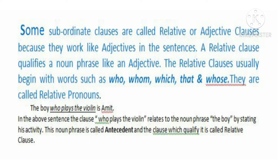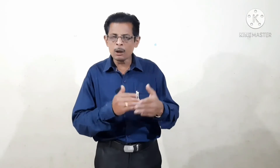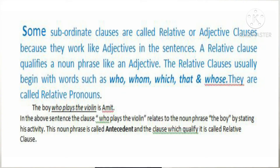All these are only relative pronouns. In case of relative clause, our work is to join two sentences and we will make one sentence a relative clause. How we will join two sentences with each other by using these relative pronouns? We can take an example. The boy is Omit. This is a sentence. And he plays the violin — this is another sentence.